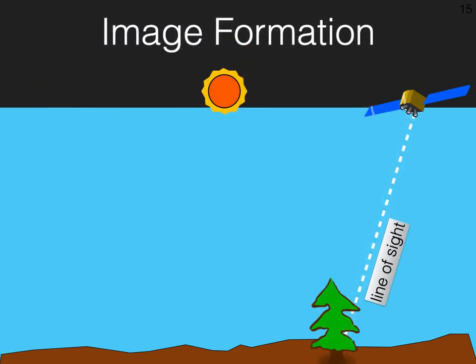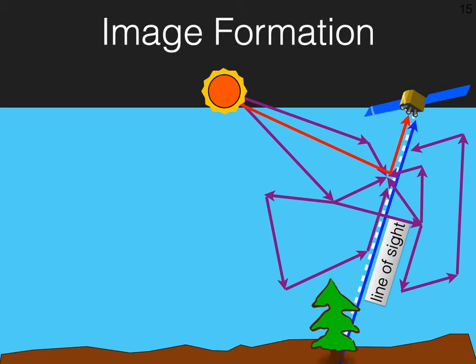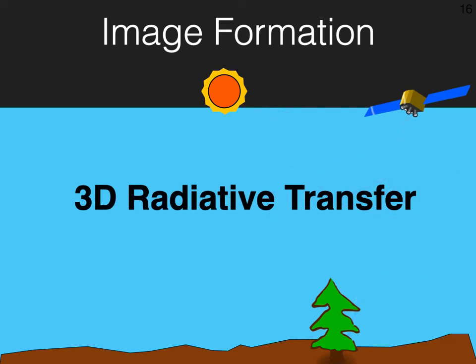A single scattering model accounts for the transmission coming from the tree and the sunlight which is scattered into the line of sight. However, dense clouds exhibit multiple scattering interactions. Therefore, not only sunlight scatters into the line of sight, but rather light traveling around the 3D domain. This is modeled by 3D radiative transfer, which I will introduce in the following slides.